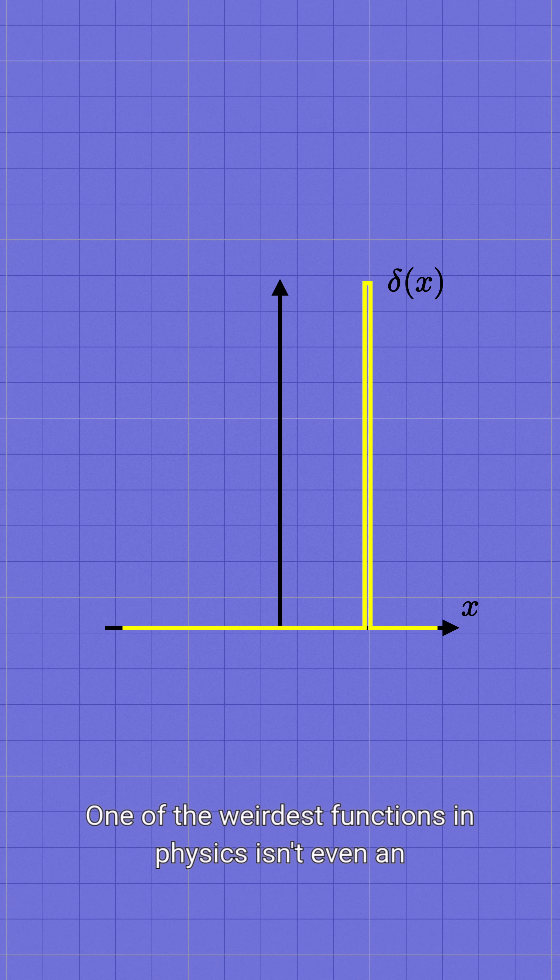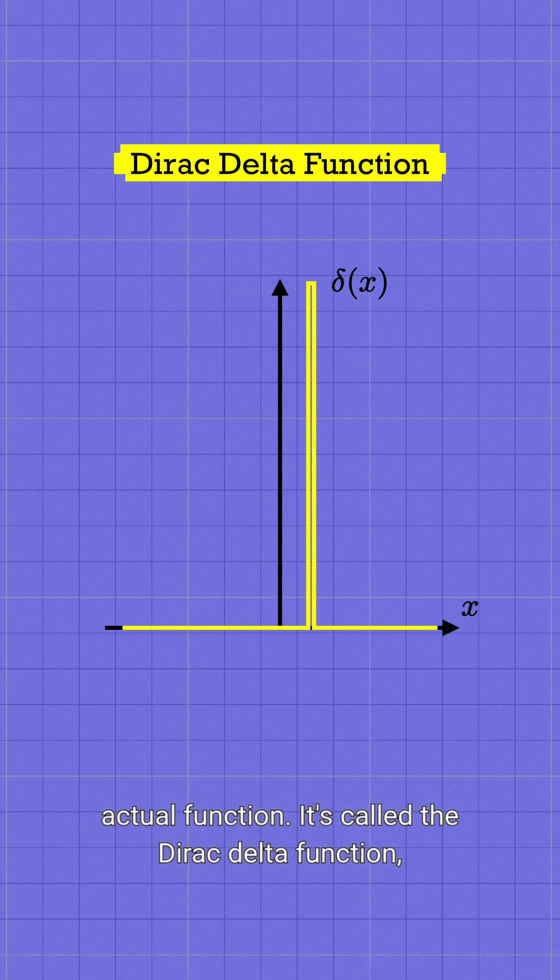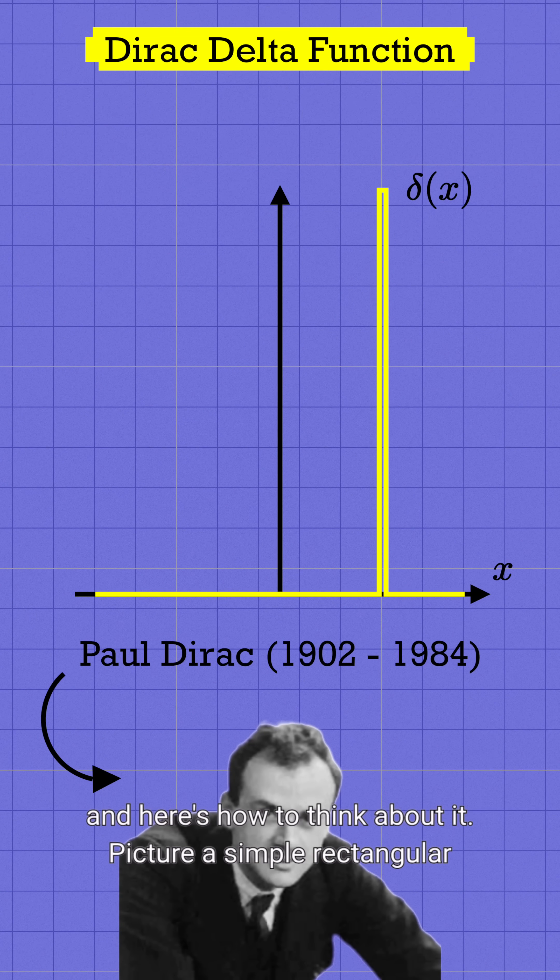One of the weirdest functions in physics isn't even an actual function. It's called the Dirac delta function, and here's how to think about it.